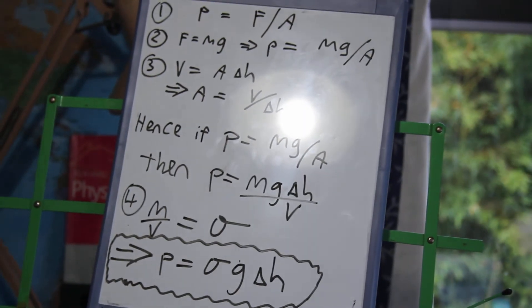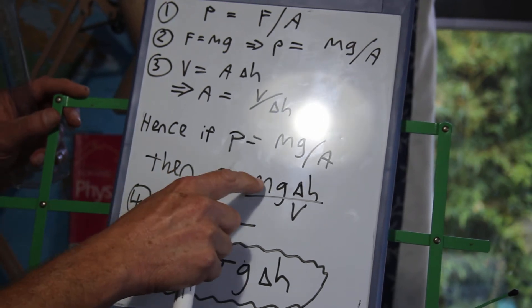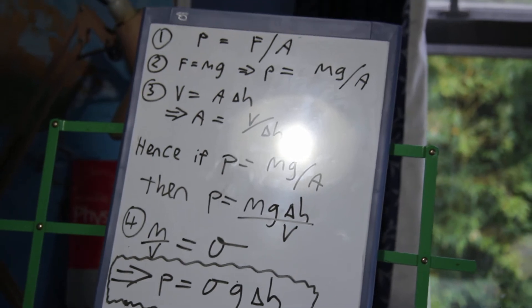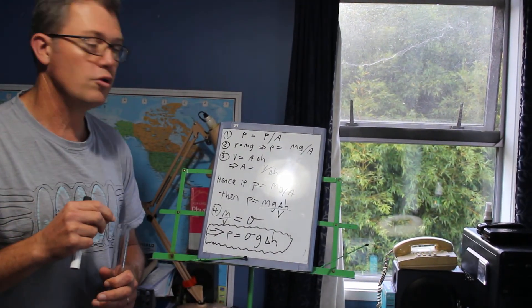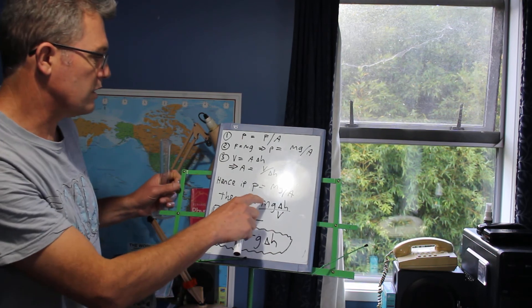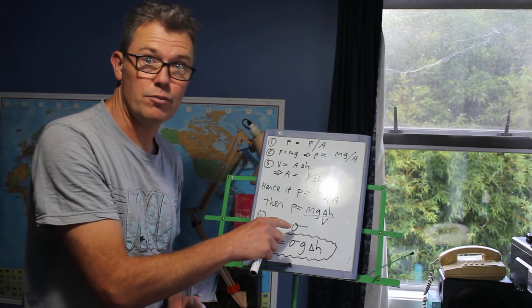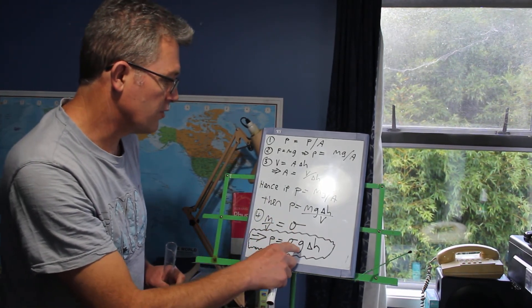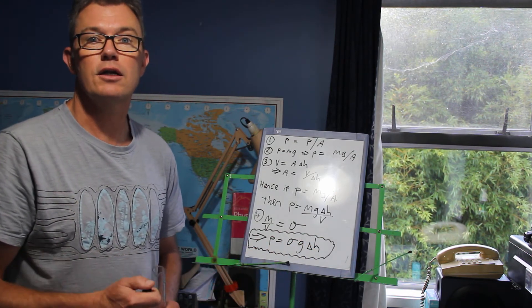There's one more thing we can do. Step four, we can say, okay, instead of using mass divided by volume, what was the first thing we learned at the beginning of this little video? It was density. Density equals mass per unit volume. So where you see mass divided by volume, you can put in density instead, and that will improve your life. So we have pressure equals density times gravity times height. You now have a formula for pressure and a fluid.